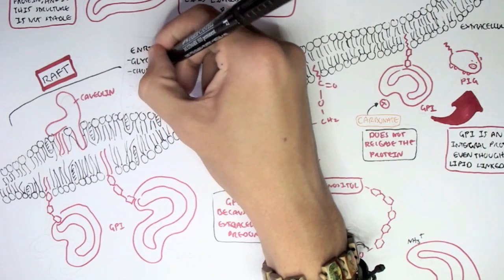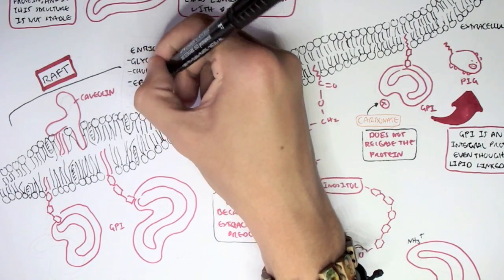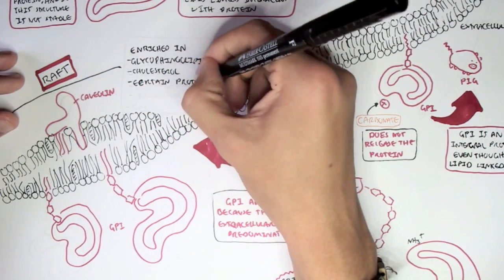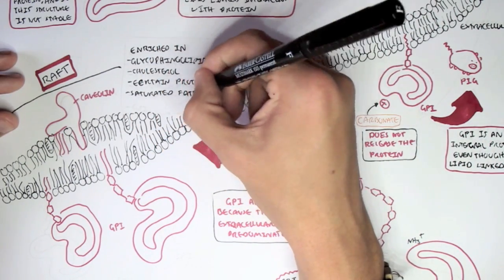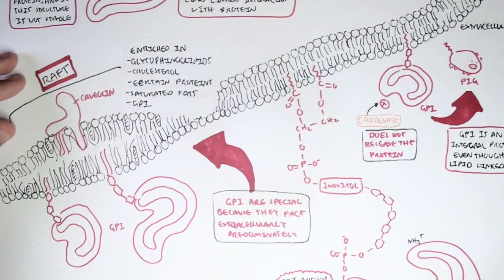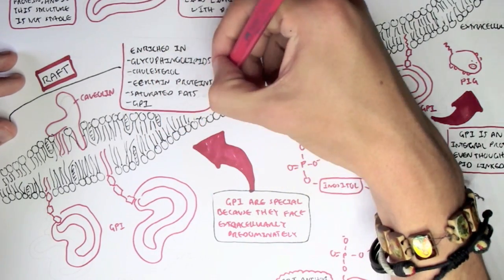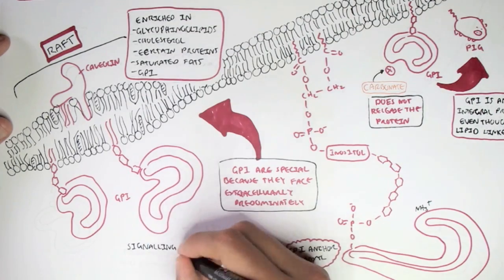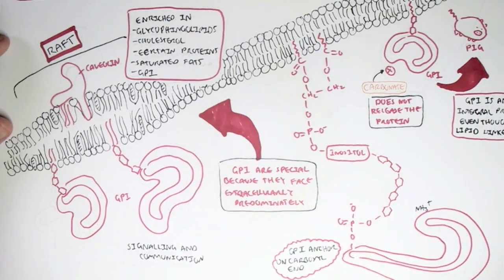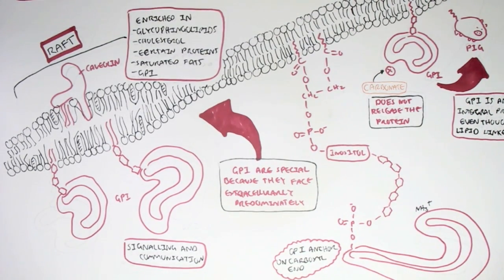Rafts are also enriched in certain types of proteins, such as caveolin, which helps in endocytosis. It is also enriched in saturated fats and also glycosylphosphatidylinositol, as mentioned. And so all these structures in this so-called raft domain help in signaling and communication with other cells and also taking in things.